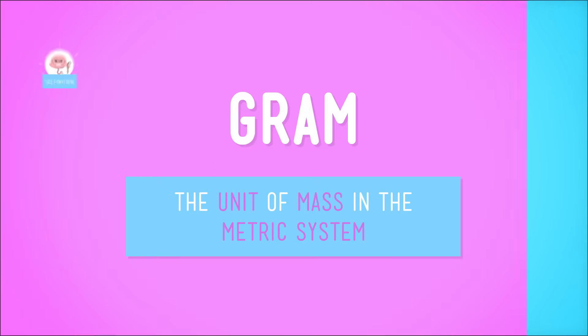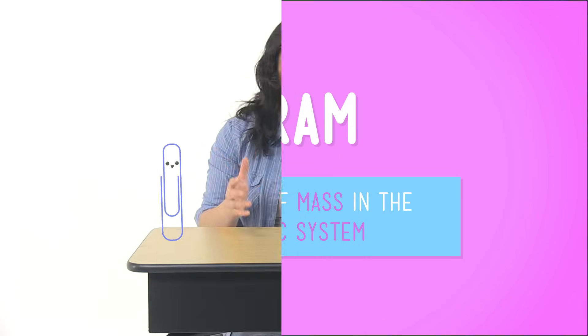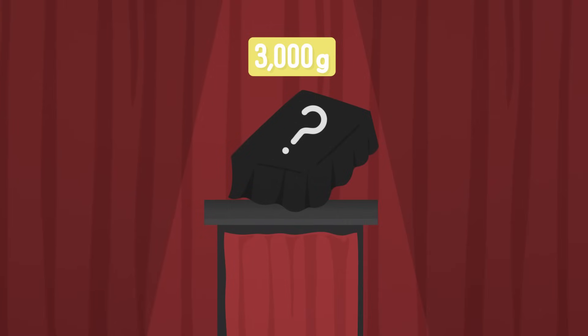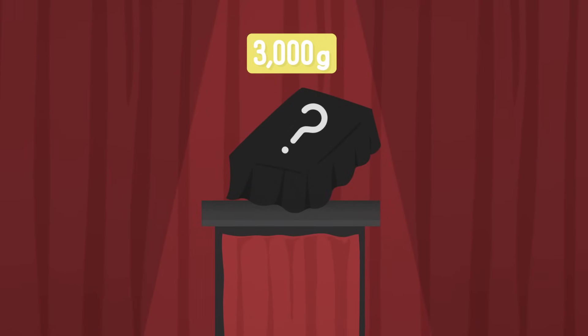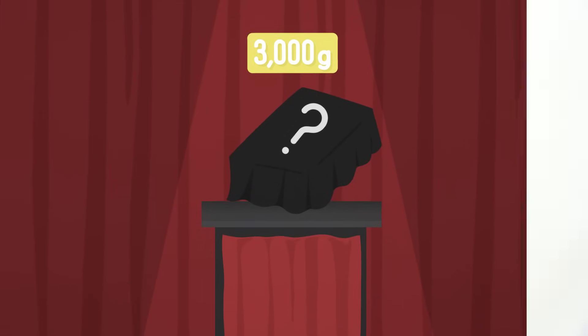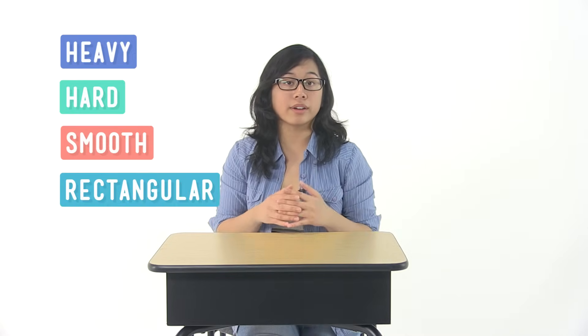It's mass. To do this, we need a different tool — a scale. And we'll use a different unit, too. In the metric system, the unit of mass is called a gram. A paperclip has a mass of about a gram. Whatever this is, is kind of heavy. It's almost 3000 grams. So here we have an object that is pretty heavy, hard, smooth, and rectangular.